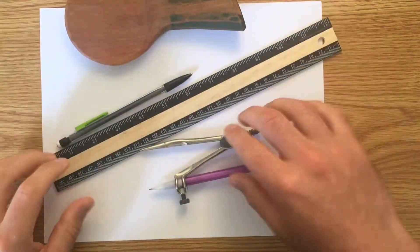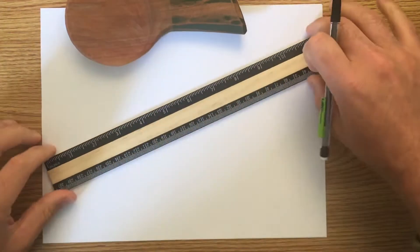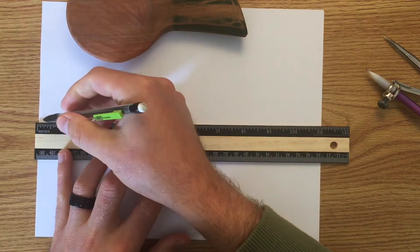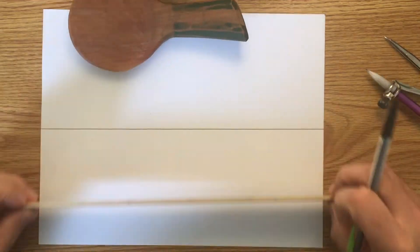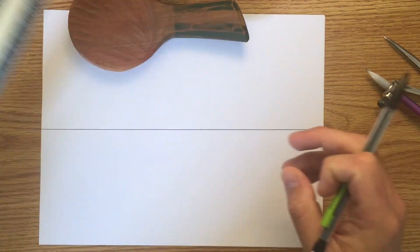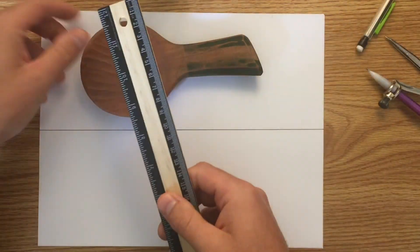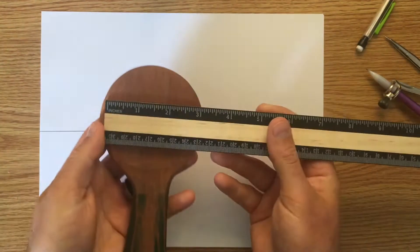So I always start with just putting one straight line down the middle of the paper. There we go, that's a straight line. And now the next thing we're going to want to do is figure out how far across we want our circle to be.